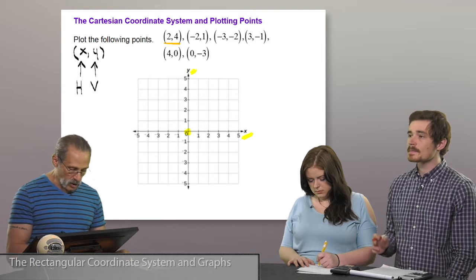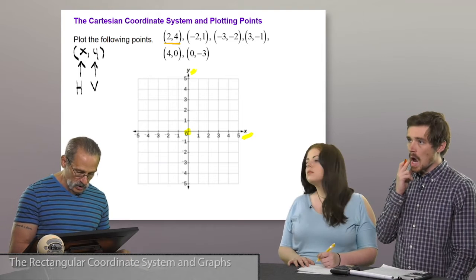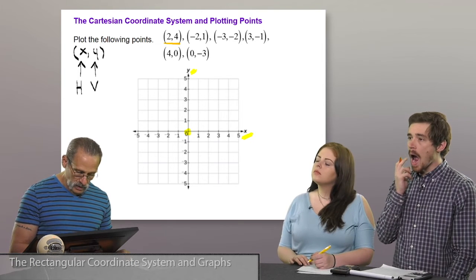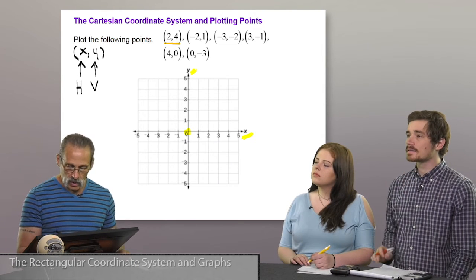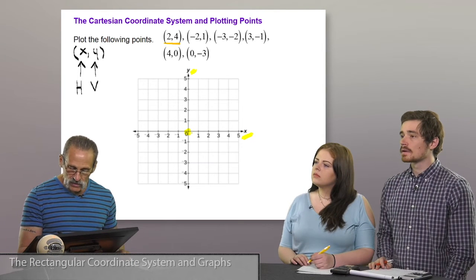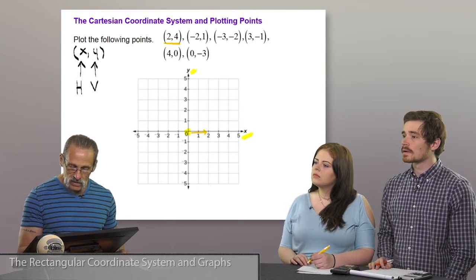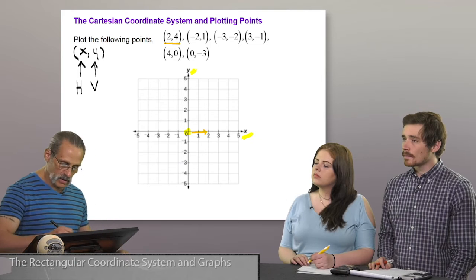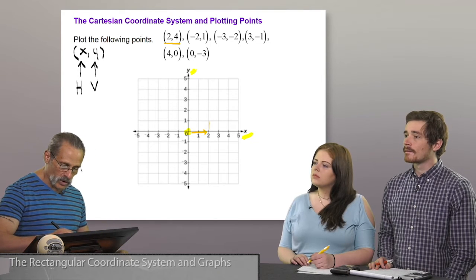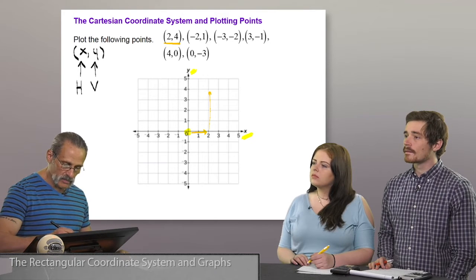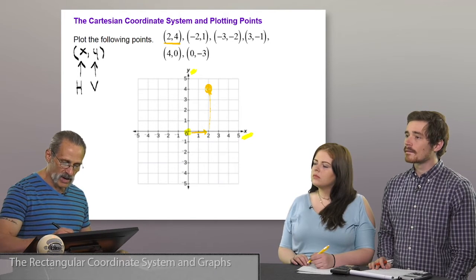So from the origin, to plot the point (2, 4), we go 2 units to the right, 4 units up, and we plot our point right here.